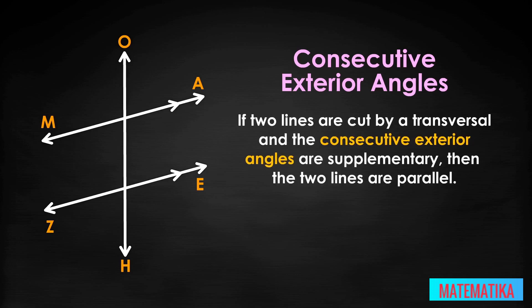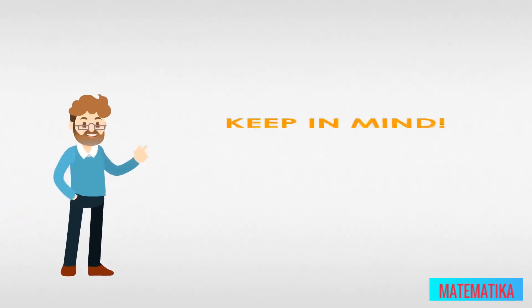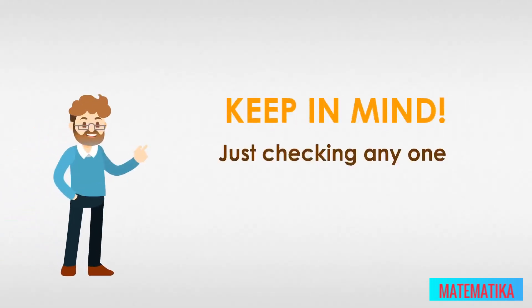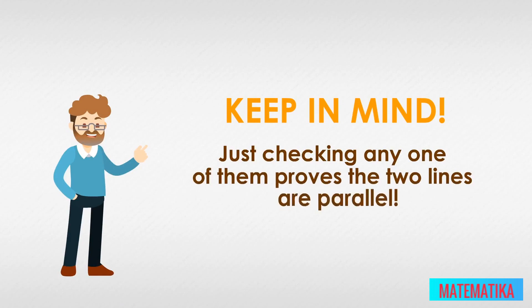Consecutive exterior angles have to be on the same side of the transversal and on the outside of the parallel lines. So, in our drawing, only these consecutive exterior angles are supplementary. Keep in mind, just checking any one of them proves the two lines are parallel.